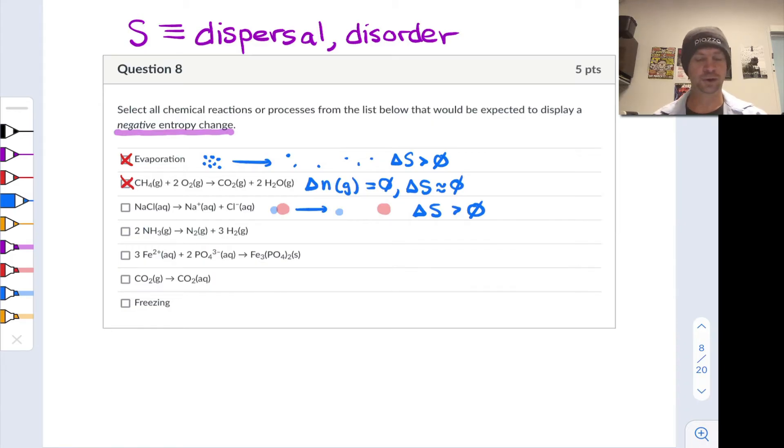How about the third case? 2NH3 going to N2 plus 3H2, and everything's gaseous. So here again, we have a change in moles of gas situation. The change in moles of gas here is positive. We're creating four moles of gas, one N2 and three H2s, from two moles of NH3, and so the delta N is actually two there. But here again, with an increase in the moles of gas, similar to the cases above, we're looking at a positive delta S situation here rather than negative. So no negative delta S just yet.